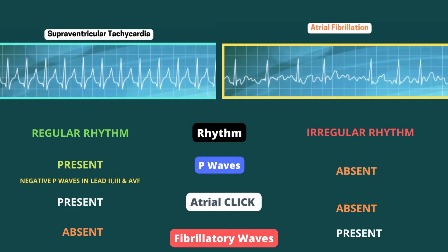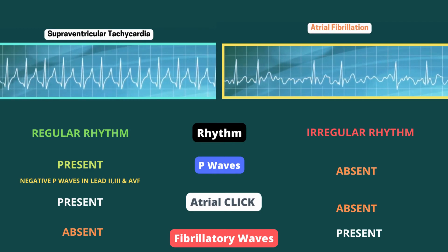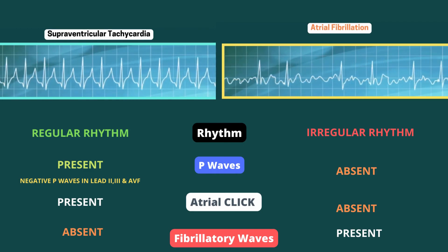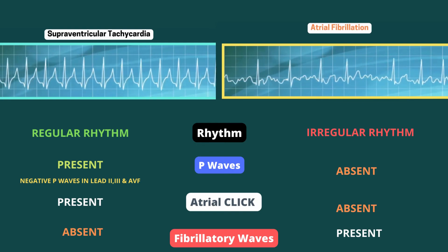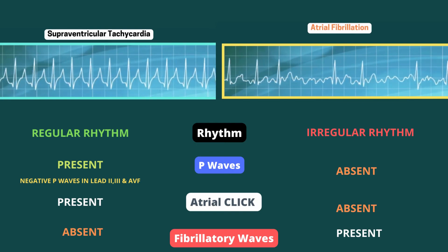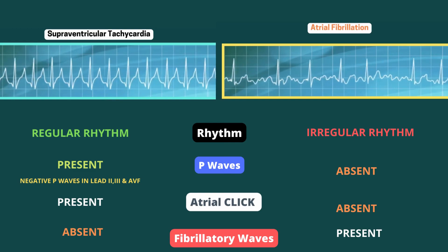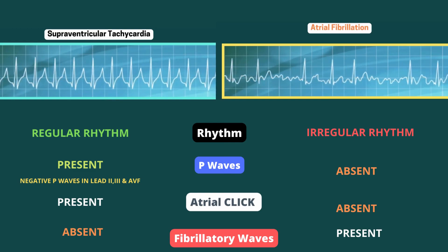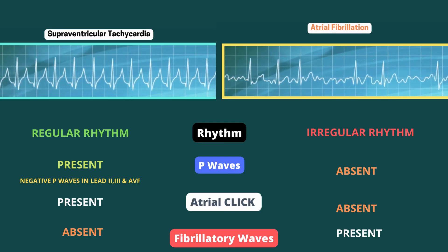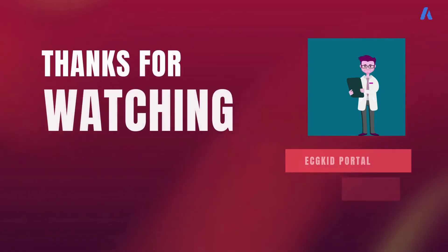Atrial kick is present in SVT, whereas it is absent in AF. AF is characterized by the presence of fibrillatory waves. AF is a type of supraventricular tachycardia and one of the leading causes of morbidity and mortality in the world. Immediate diagnosis and distinguishing it from other kinds of tachyarrhythmias is therefore important.